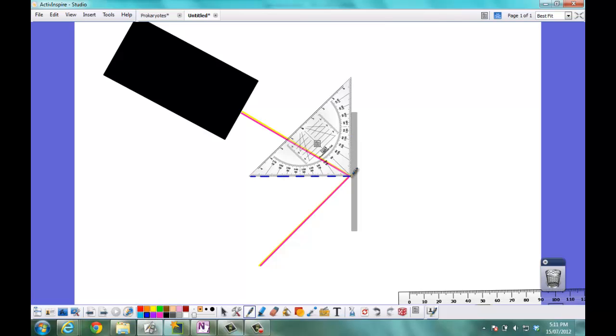I'm also going to add a label to that line. I'm going to label it normal. And I'm also going to add some labels to my lines so this is the incident ray and this is the reflected ray.